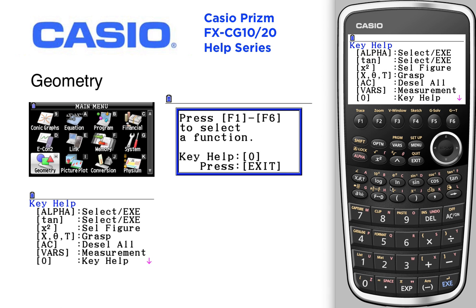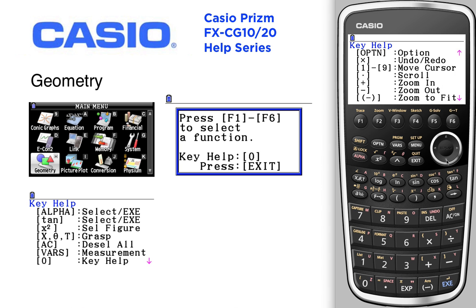We'll take a look at the help menu. The help menu says the alpha key is a way of selecting and executing, same thing with tangent. X-squared is for selecting an entire figure. X-theta-T grasps deselect, measure toggle. Down we've got a few more options under options, undo and redo.